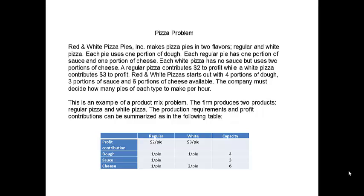This is an example of a product mix problem. The firm produces two products: regular pizza and white pizza. The production requirements and profit contributions described above can be summarized in the following table. You can tell this is a linear programming situation because the two types of pizza share ingredients. The shared ingredients are limited or constrained. We want to solve for how much pizza would be the best — in other words, what is the optimal number of regular and white pizzas?